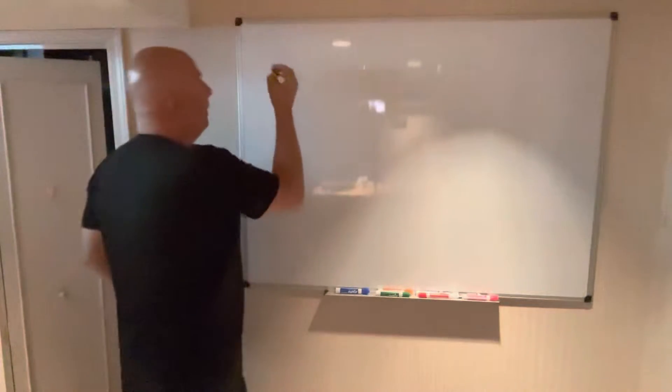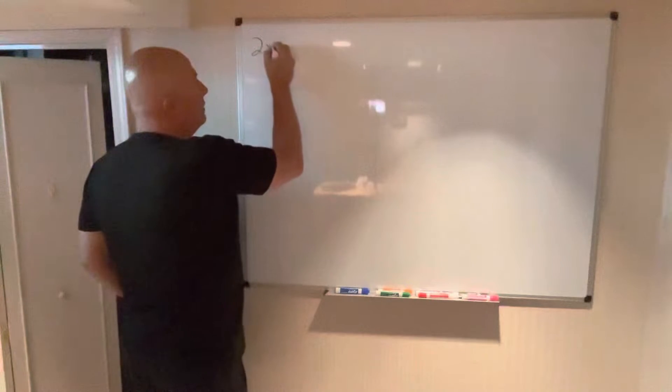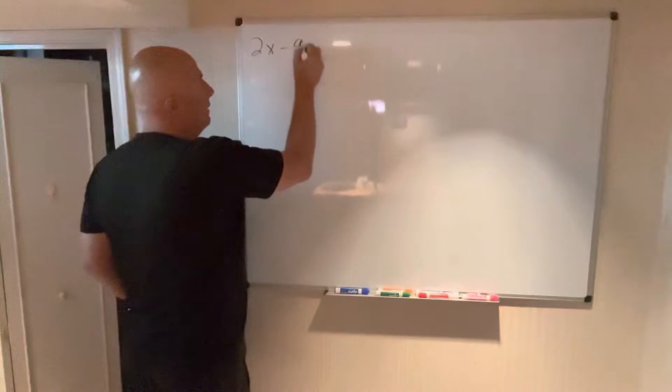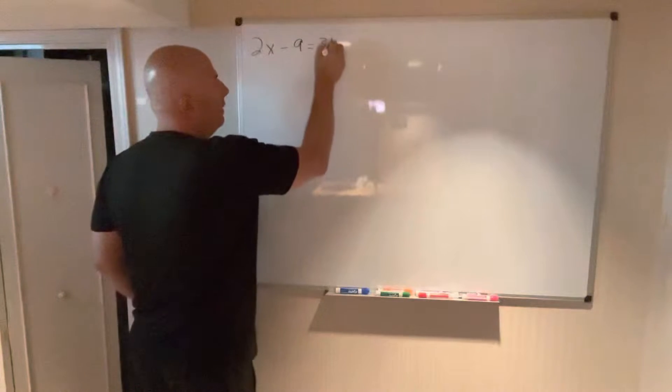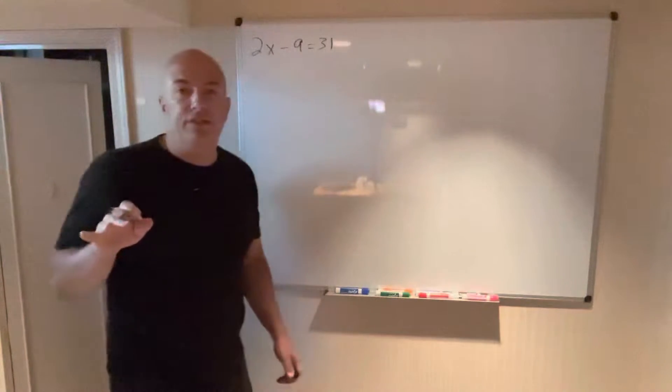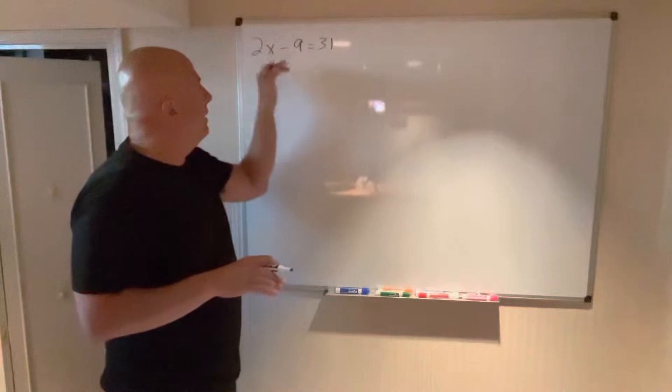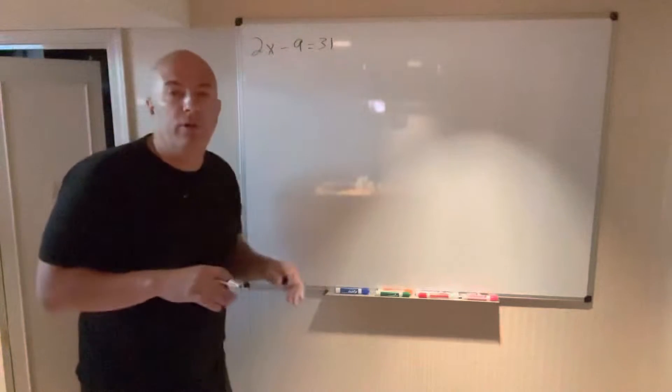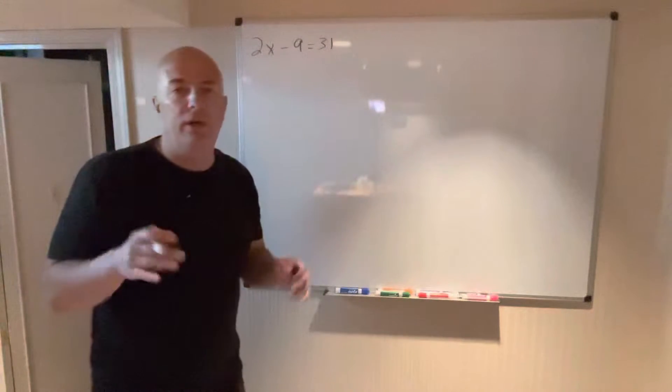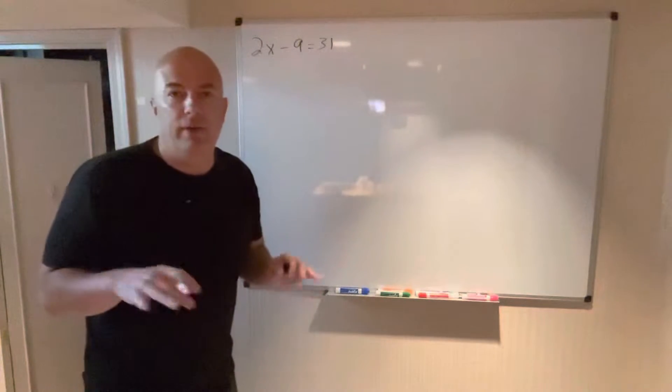So let's take an example: 2x minus 9 equals 31. Now in your class you've probably been taught, oh we've got to eliminate the 9 and then divide by whatever this number is, simplify, and we get our number. I want to skip all that. I'm a big fan of patterns and shortcuts and speed.